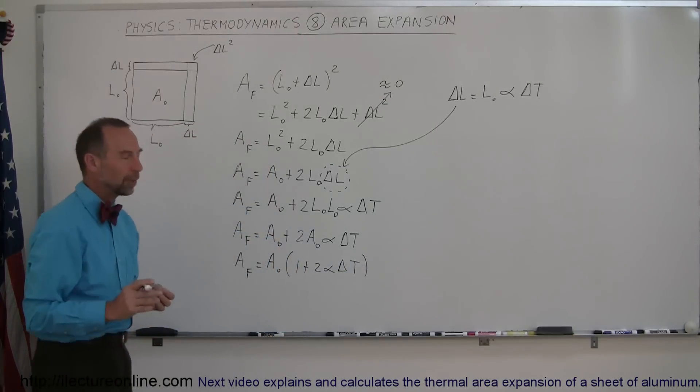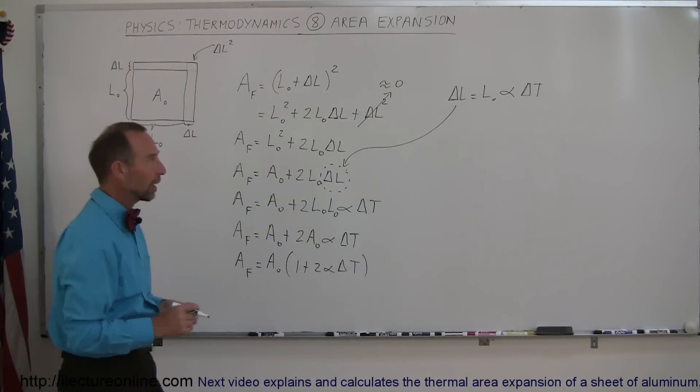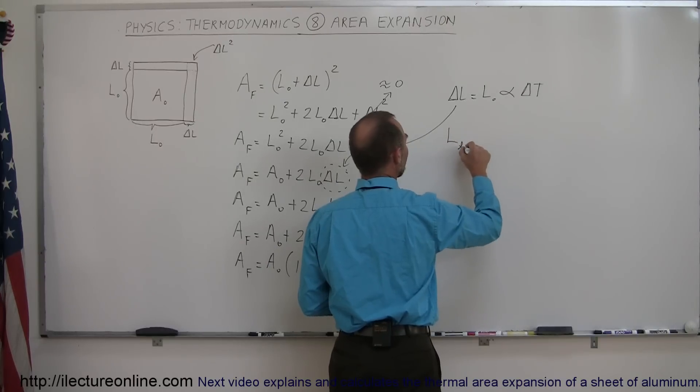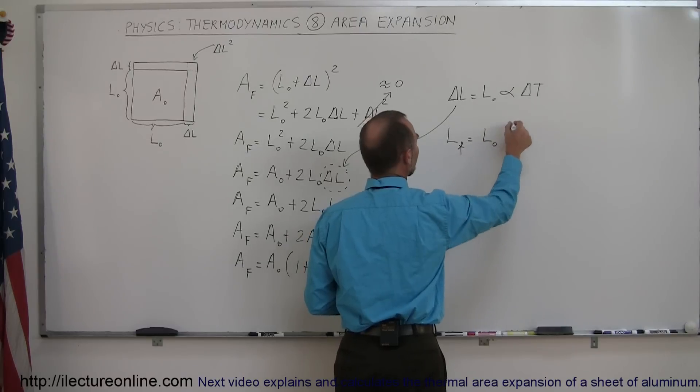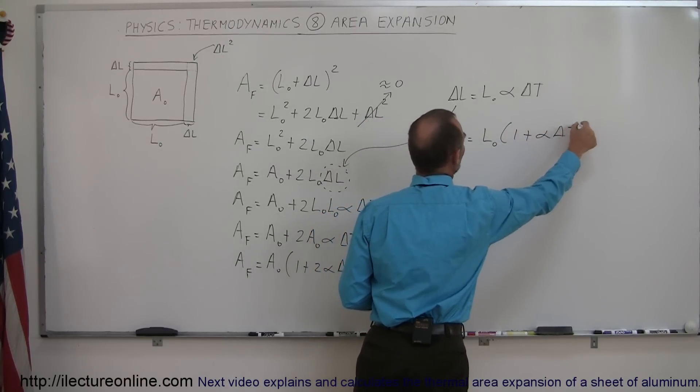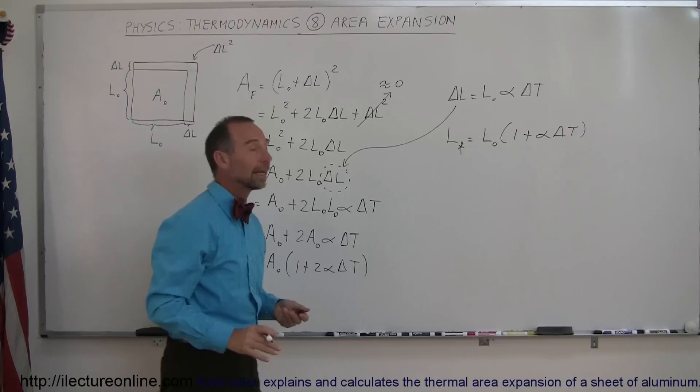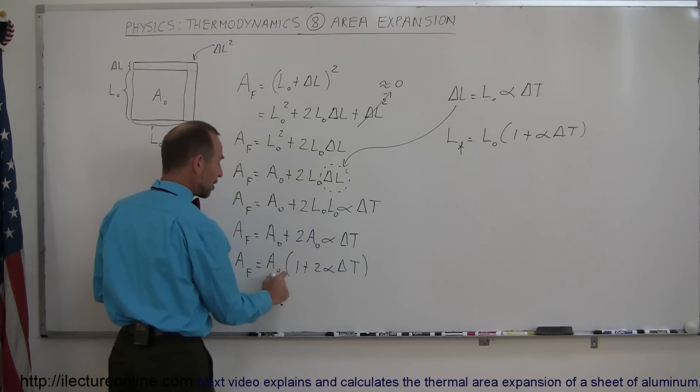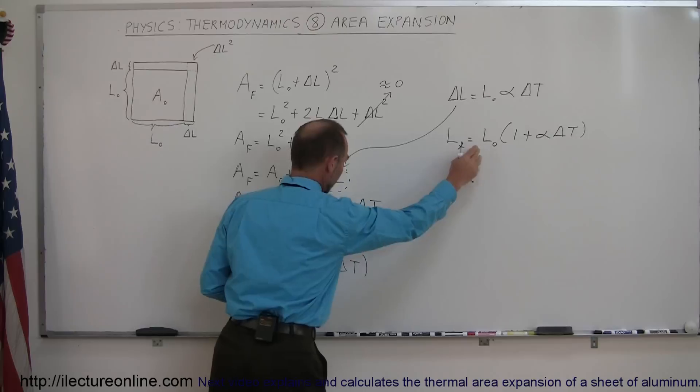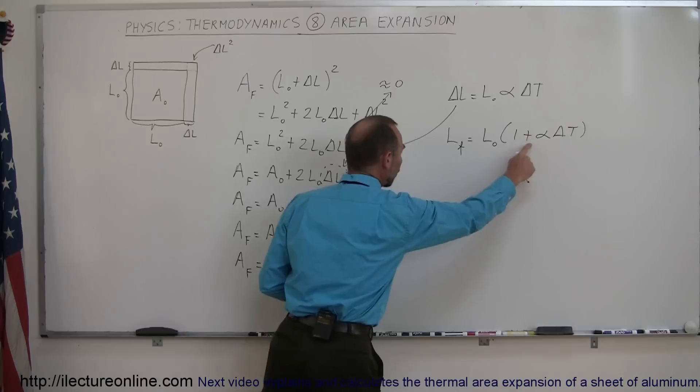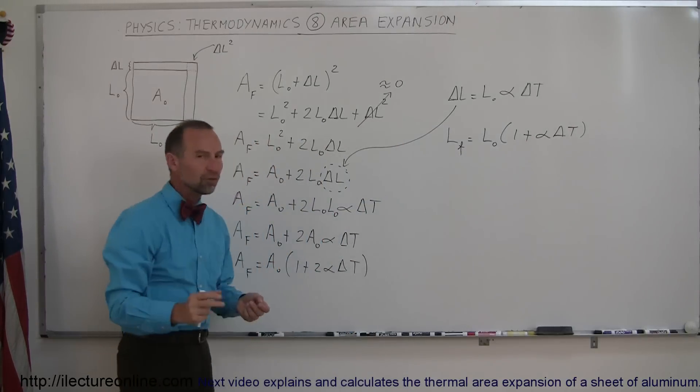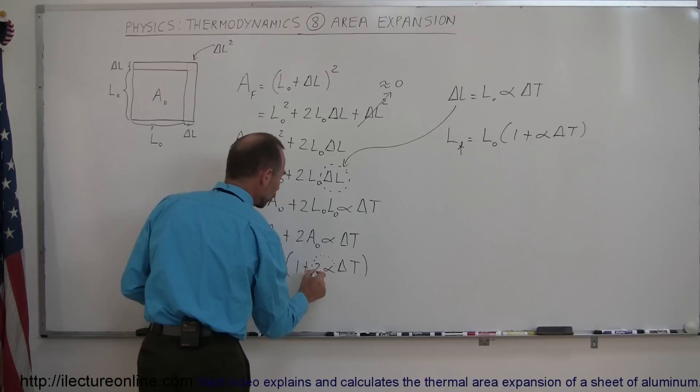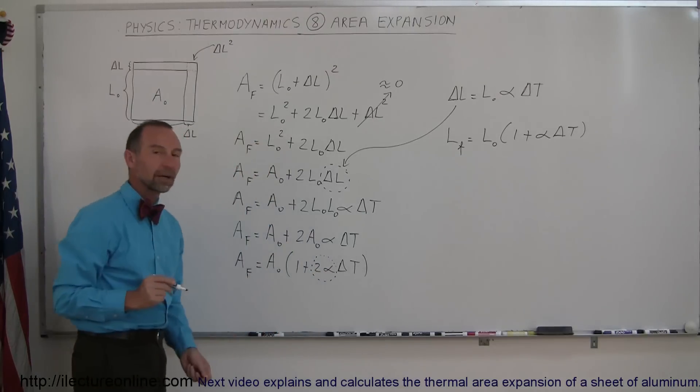Now, let's compare that to what we had when we did the linear expansion. If we take this and we use it to write L final equals L initial times one plus alpha delta T, that's the equation we got when we calculated the linear thermal expansion, then we can see the difference here is that instead of L sub nought, we have A sub nought, and instead of alpha, we have two alpha, which means that the area expansion coefficient is really twice the linear expansion coefficient.